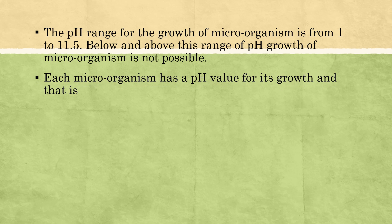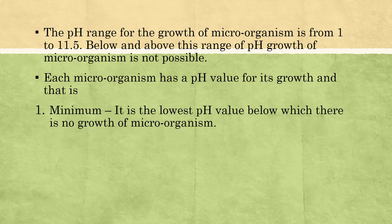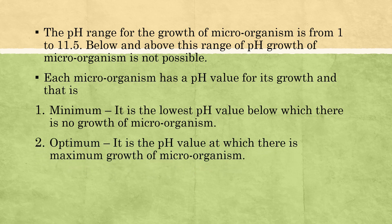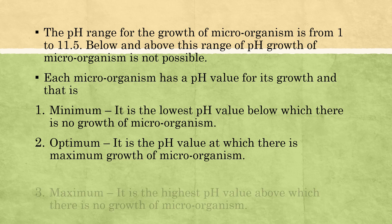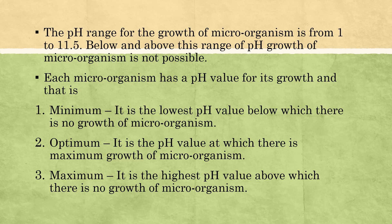Each microorganism has three specific pH values for its growth: the minimum pH value, the optimum pH value, and the maximum pH value. The minimum pH value is the lowest pH below which there is no growth of the microorganism. The optimum pH value is the pH at which there is maximum growth of the microorganism. The maximum pH value is the highest pH above which there is no growth of the microorganism.